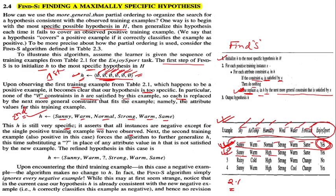The second training example is sunny, warm, high, strong, warm, same — also a positive example. The current hypothesis after step one is sunny, warm, normal, strong, warm, same. The third attribute is 'normal' in the hypothesis but 'high' in the new example — there is a mismatch. So the hypothesis is still too specific.